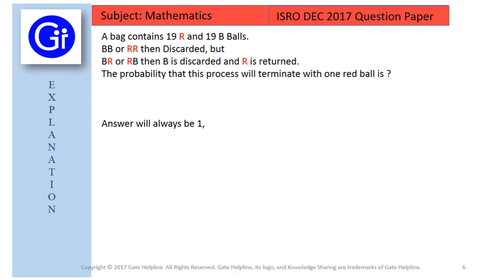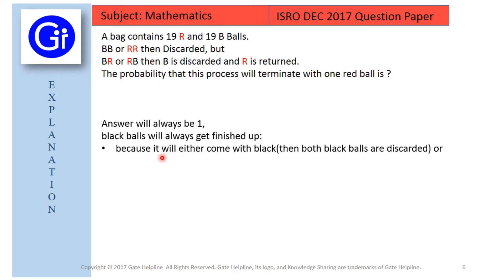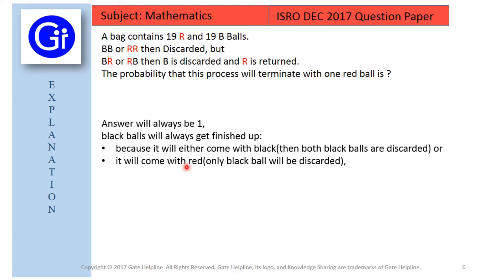The probability of this process is always 1, because black balls will always get finished up. A black ball will either come with another black ball — then both are discarded — or it will come with a red ball, in which case only the black ball is discarded and the red ball is returned into the bag.